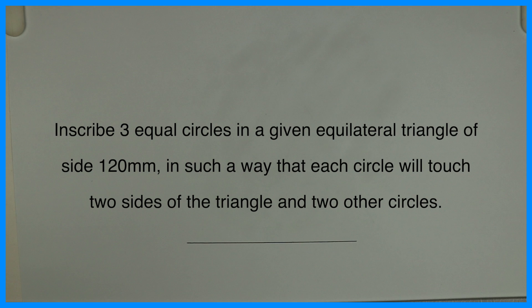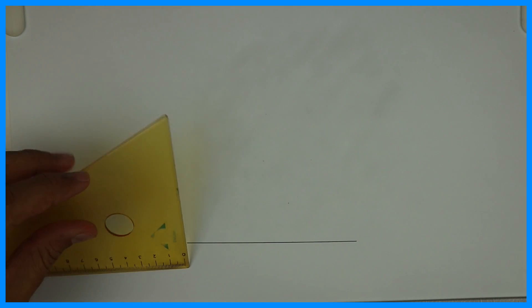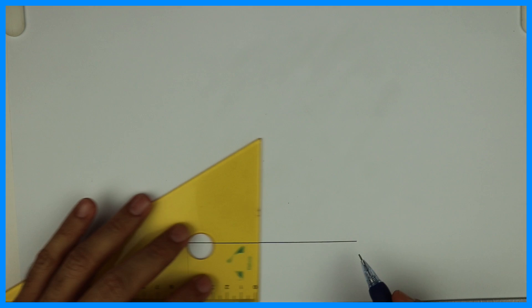Welcome to technical drawing. Today we're going to inscribe three equal circles in a given equilateral triangle of side 120mm, in such a way that each circle will touch two sides of the triangle and two other circles. First, we will draw a line 120mm long.